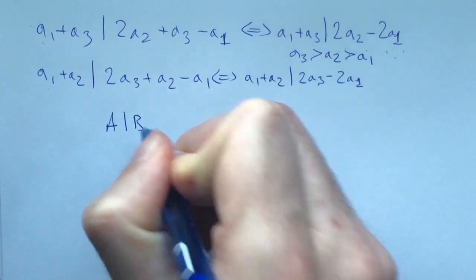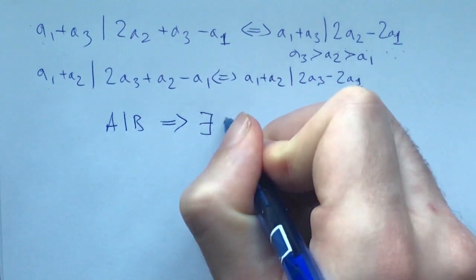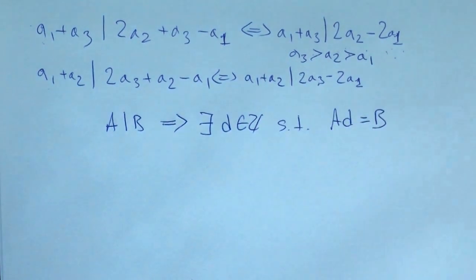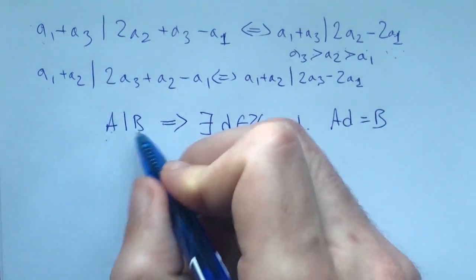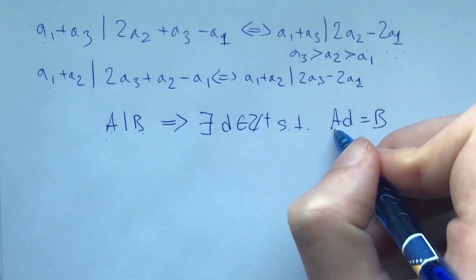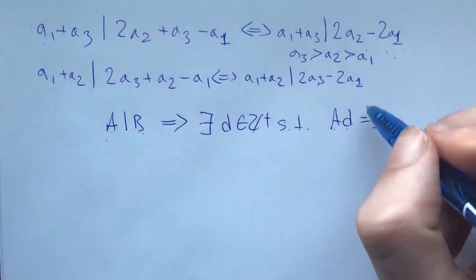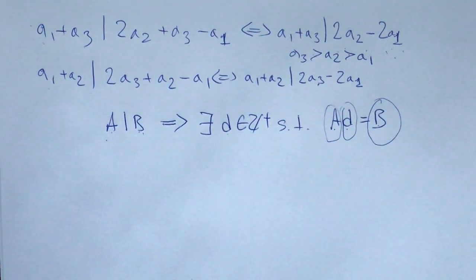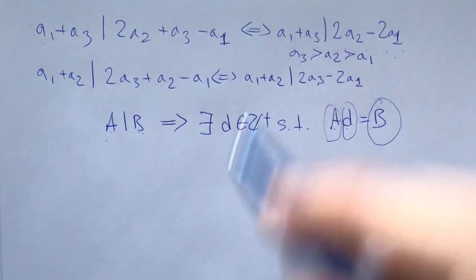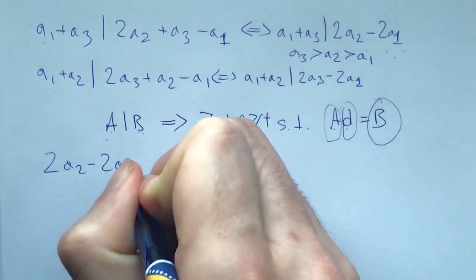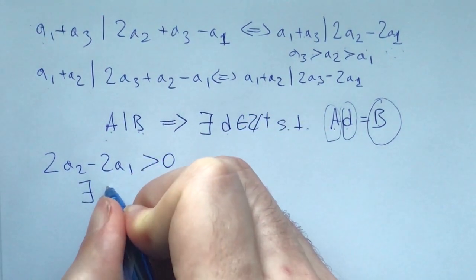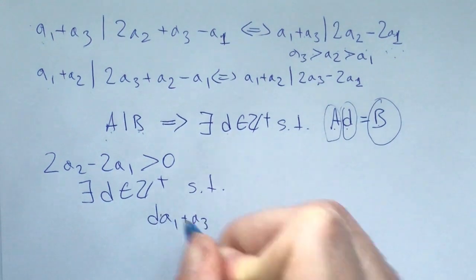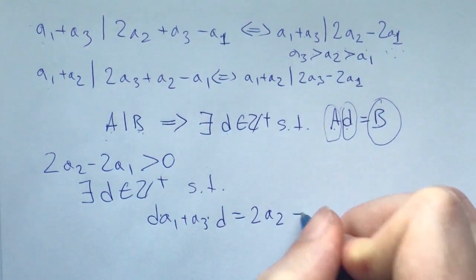How can we deduce anything here? Remember that a3 > a2 > a1 in this case. Here's a hint: if a divides b, that means there exists an integer d such that a times d equals b. If we're talking about positive integers a and b, then there exists a positive integer d such that a·d = b. But if b isn't that much bigger than a, that means d can't be that big. Can you see how that applies here?